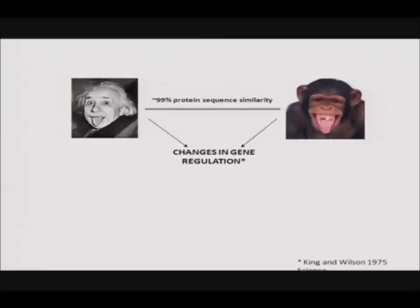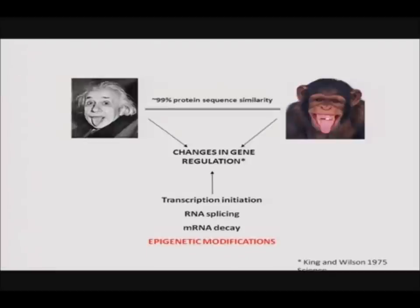Despite many previous studies on gene expression between primates, there has been very little research into the evolutionary impacts of various mechanisms by which gene expression can be regulated, such as transcriptional initiation, RNA splicing, mRNA decay, and epigenetic modifications. For this project, I focus on investigating epigenetic changes that might contribute to differential gene expression between the species.